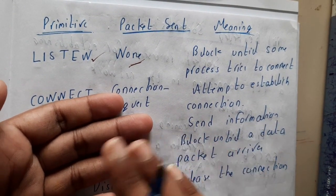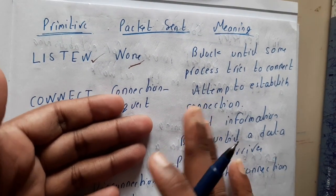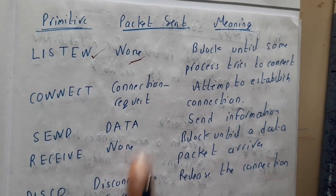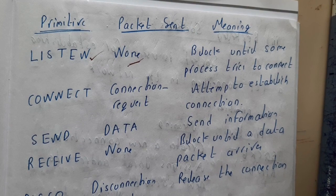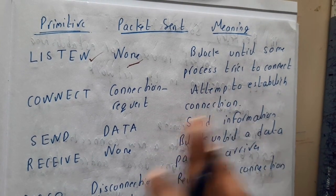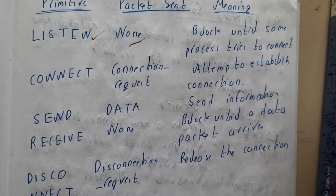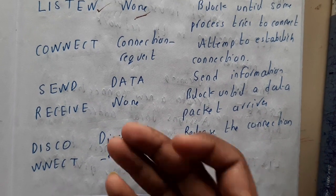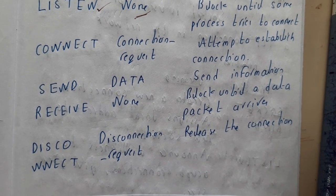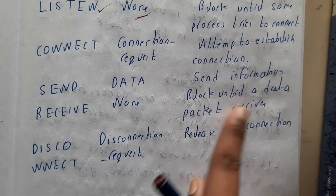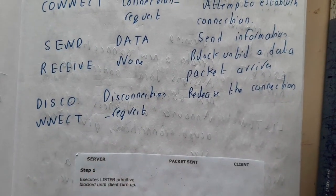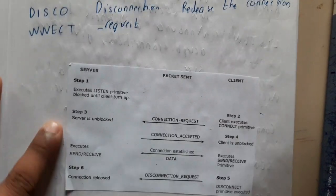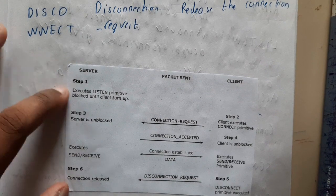CONNECT means you are requesting a connection — you are dialing the call, attempting to establish a connection. SEND means you are now talking and sharing your data or information. RECEIVE means you are waiting for someone's message — blocking until a data packet arrives. DISCONNECT means you are sending a disconnect request — telling the other side to end the call, and the connection is terminated.